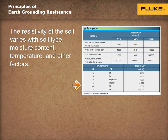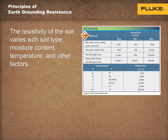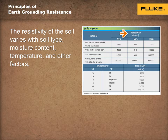Understanding the type of soil and its resistance also helps in selecting the material of the grounding electrodes. In general, the lower the soil resistivity, the higher the corrosiveness of the soil. Electrodes made of stainless steel or copper, either plated or solid, are the least affected by corrosion, and galvanized electrodes are the most affected over time.